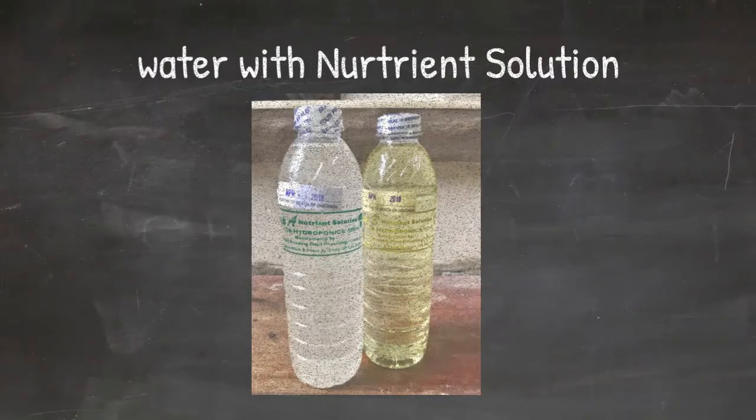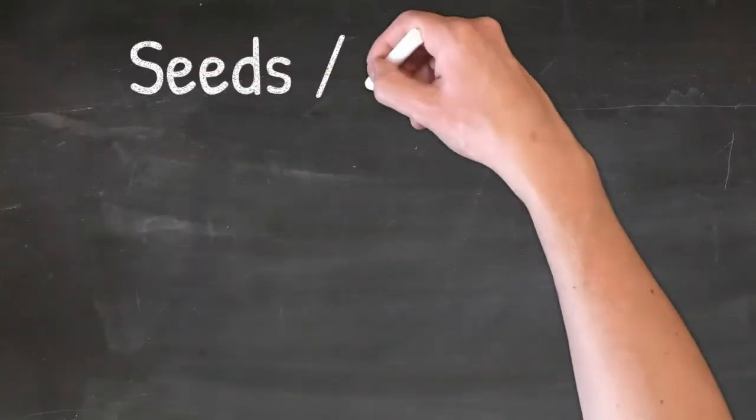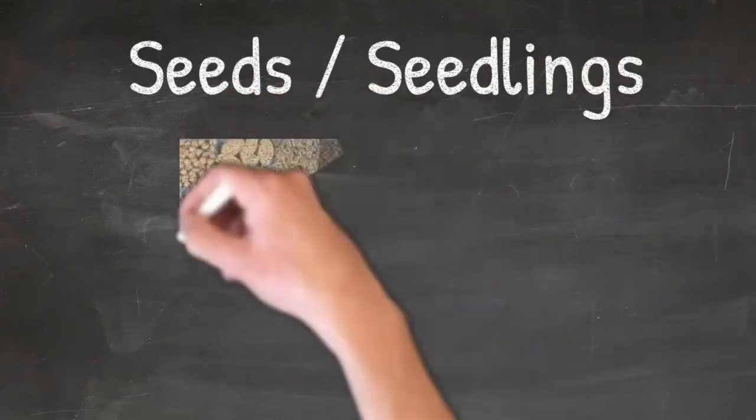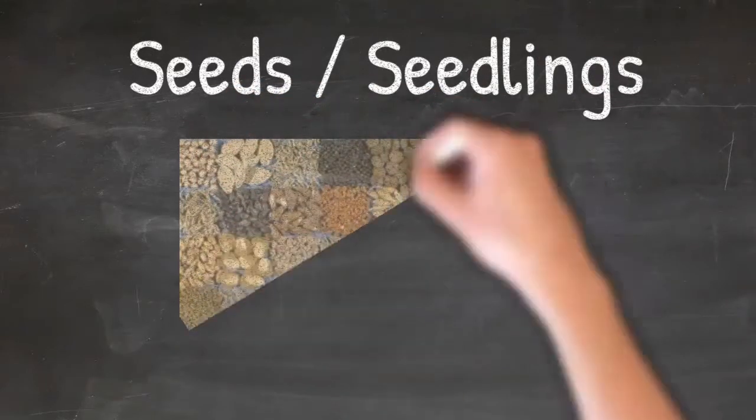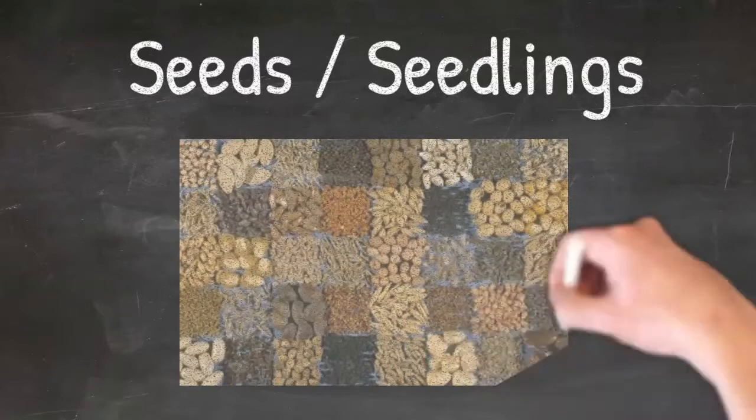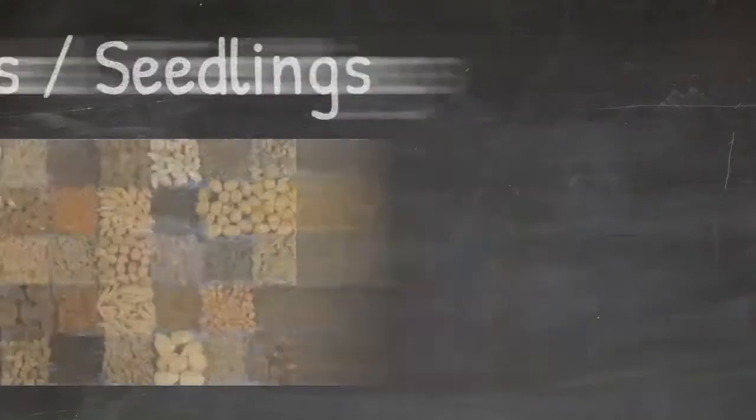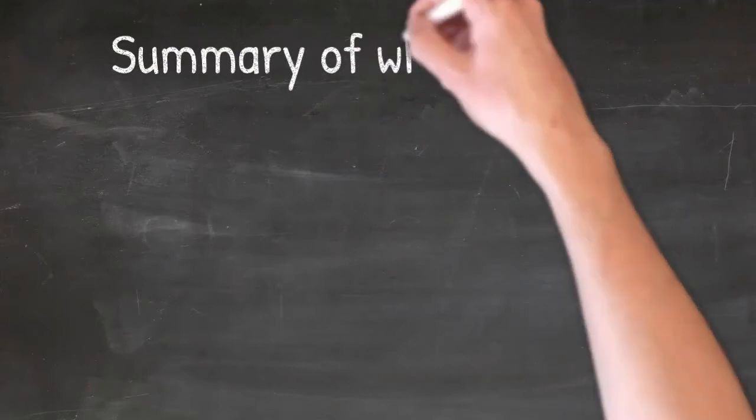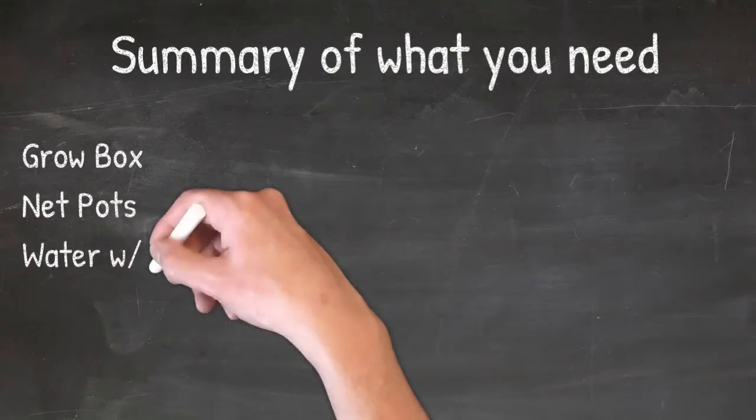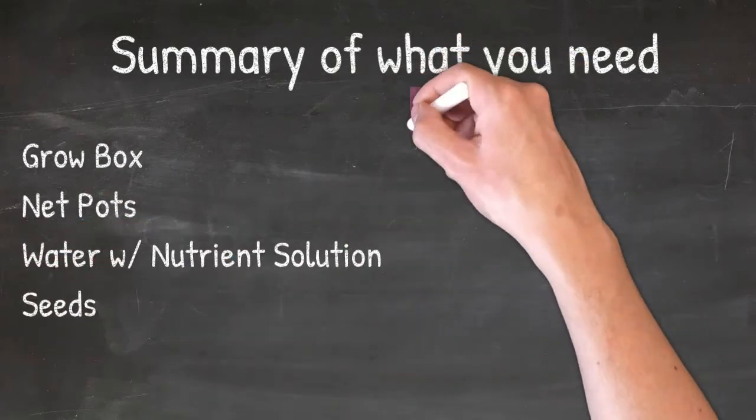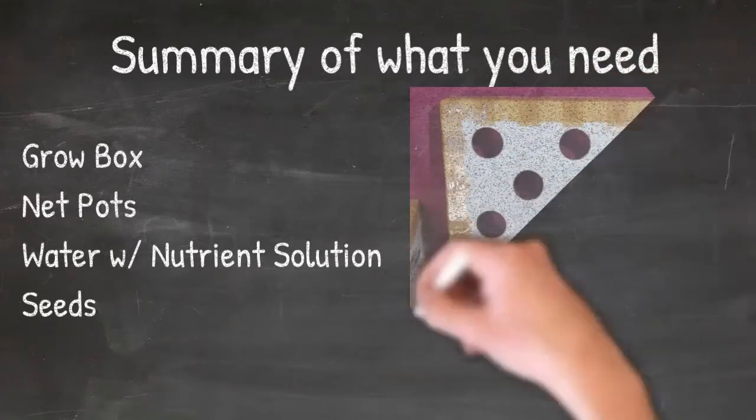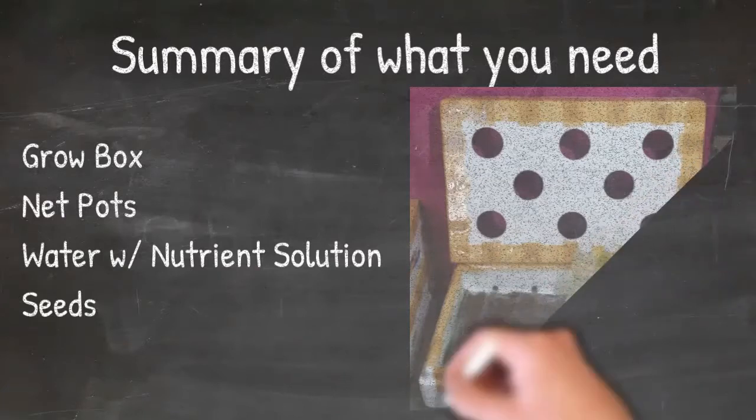Of course, lastly, pinaka importante sa lahat, you need the seeds. Once you have the seeds installed and more available, then you're good to go in setting up yung Kratky method. Those are the things that you need for you to be able to start and install one Kratky system for hydroponics. It's very easy to install and set up. You just need to have the complete items needed for you to grow one successful setup.